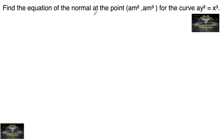Find the equation of the normal at the point (am², am³) for the curve ay² = x³. So the given curve equation is ay² = x³.